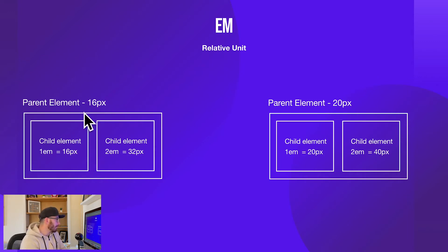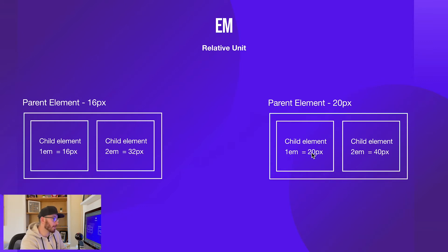To give you a little illustration: if you have a parent element set to 16 pixels, then a child element at 1em is going to be 16 pixels and 2em is going to be 32 pixels. Now if the parent element is changed to 20 pixels, then 1em equals 20 pixels and 2em is 40 pixels. So em measurements are relative to the parent element.